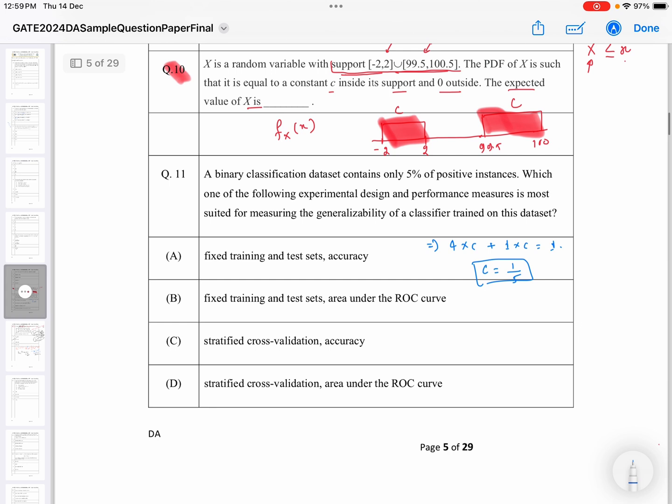And how are we going to get the expected value? The expected value of X is equal to the integral from -2 to 2 of X times C dX, plus the integral from 99.5 to 100.5 of X times C dX.